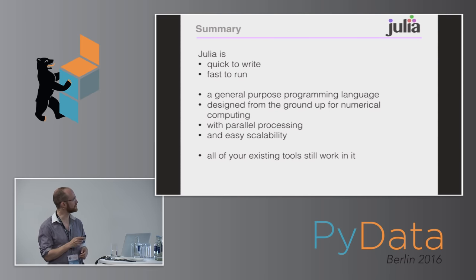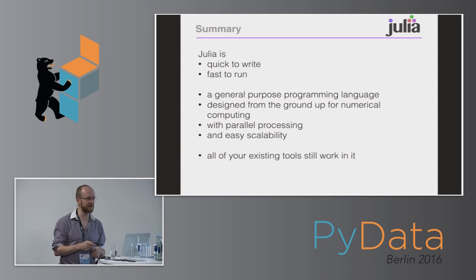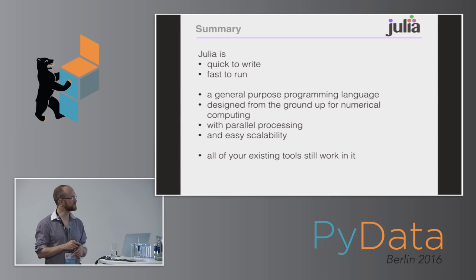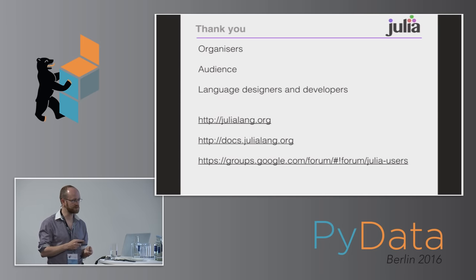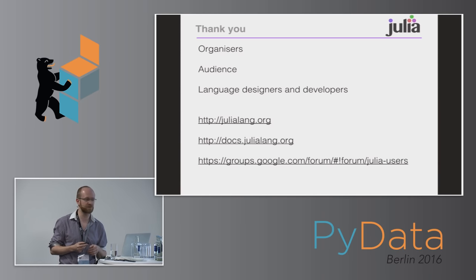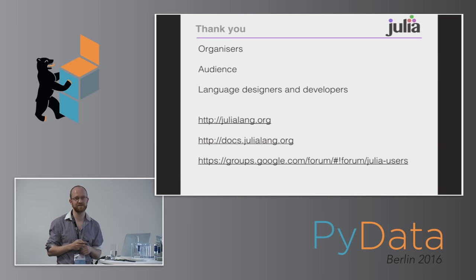To summarize: Julia is quick to write, fast to run, and a general purpose programming language designed from the ground up for numerical computing, with parallel processing, easy scalability, and all your existing Python tools should work with it. With that, I'd like to thank the organizers for inviting me, thank all of you for listening, and I'm really grateful to the guys who went to the trouble of writing Julia. Thank you very much.